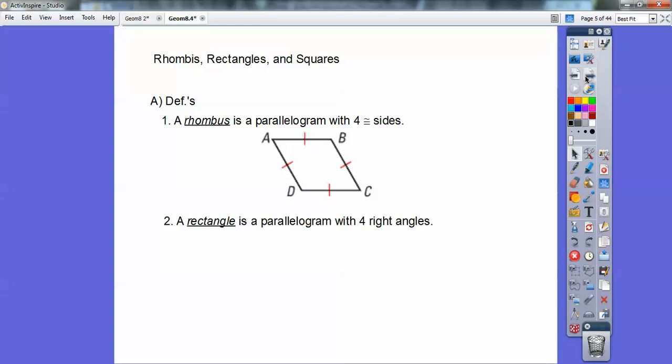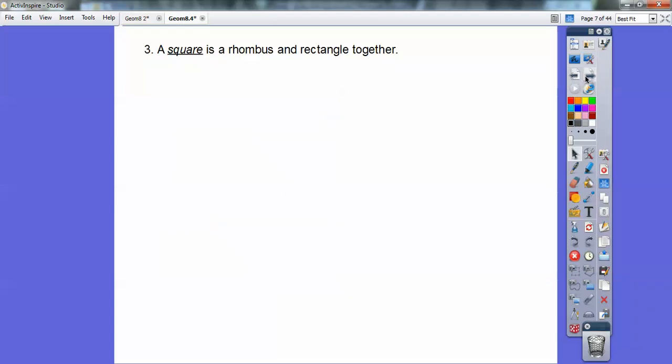A rectangle is a parallelogram with four right angles. So there's four right angles right there. Okay, a square is a rhombus and a rectangle together. So there's a rhombus and a rectangle together. Four right angles and four congruent sides.